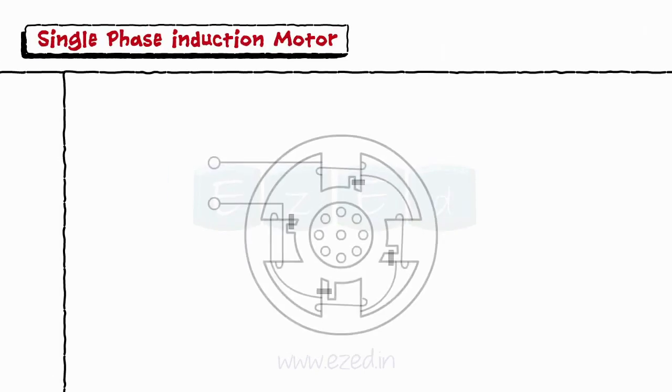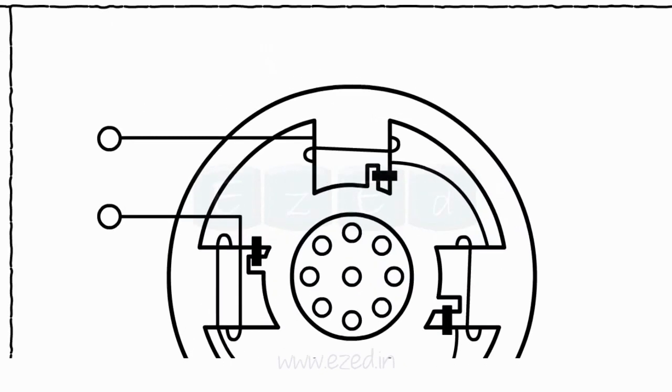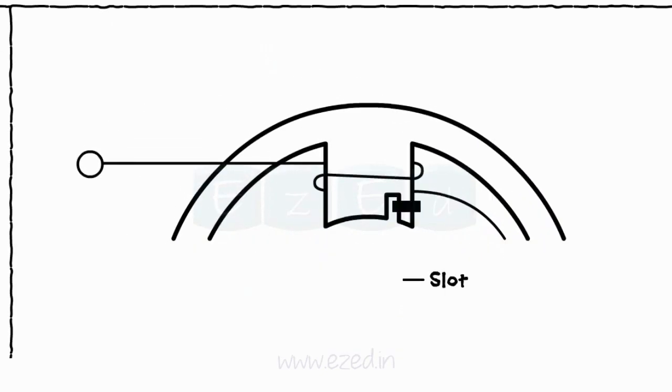The third type is shaded pole induction motor. In this motor, every laminated pole has a slot cut across the laminations approximately one-third distance from the edge. A short-circuited copper coil known as a shading coil is placed around the small part of the pole. This part of the pole is known as a shaded part and the other as a non-shaded part.